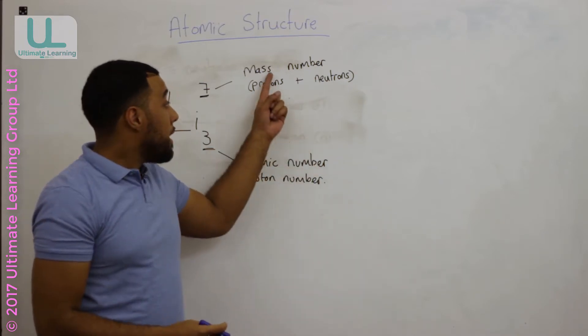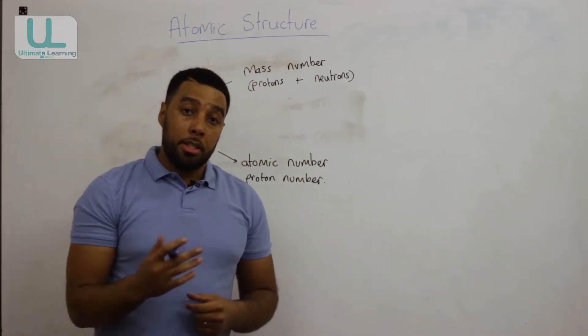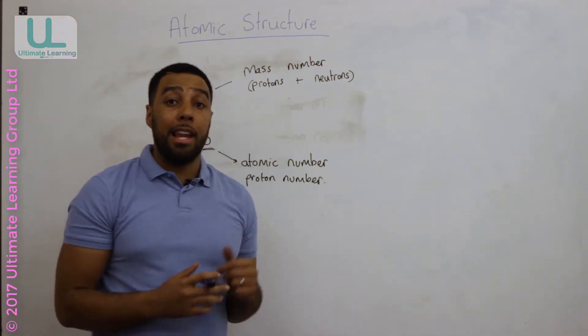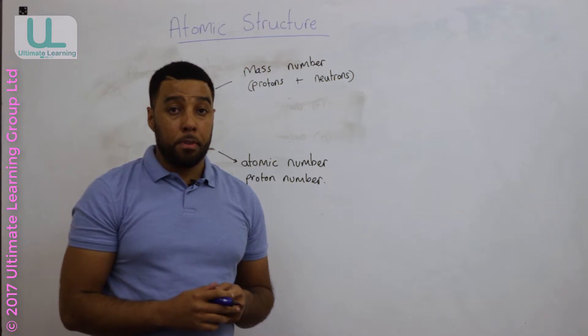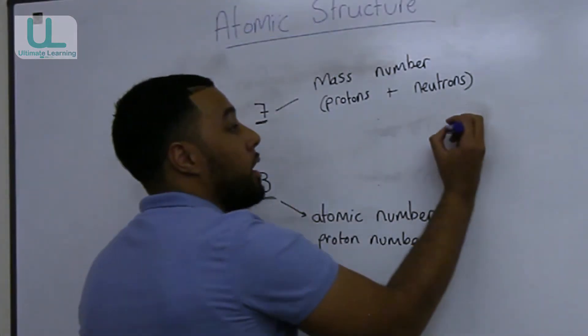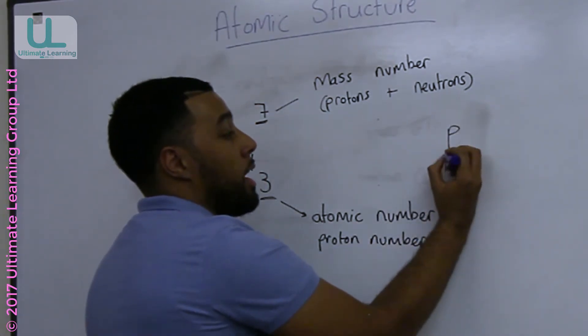So if we add protons and neutrons together, we get the mass number. You could be asked in your exam to calculate proton and neutron or electron numbers.